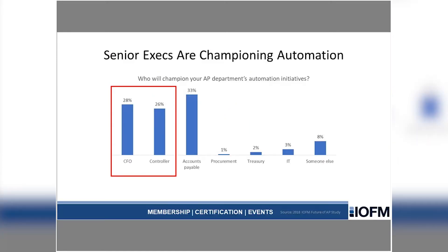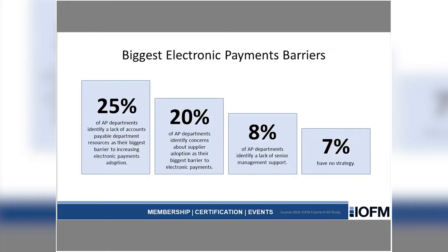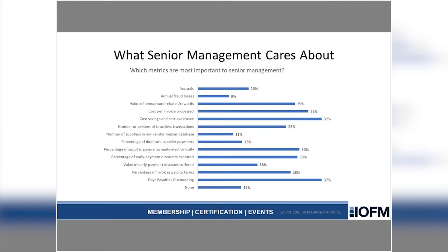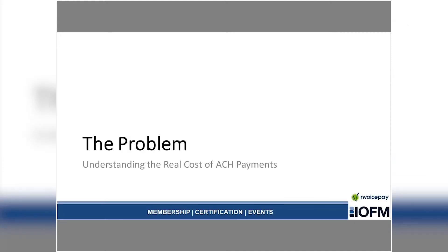Senior executives are watching. They know there's value in automating electronic payments and may be pushing your initiatives right now. Senior executives such as the CFO and the controller are expected to be nearly as big a champion for electronic payments automation as AP leaders themselves. That's not to say it'll be smooth sailing — departments face challenges with lack of resources, concerns about supplier adoption, and in some cases a lack of senior management support or no strategy. But there are ways to make this happen if you use the right approach to electronic payments, and that will help achieve improvements in the metrics senior management cares most about.